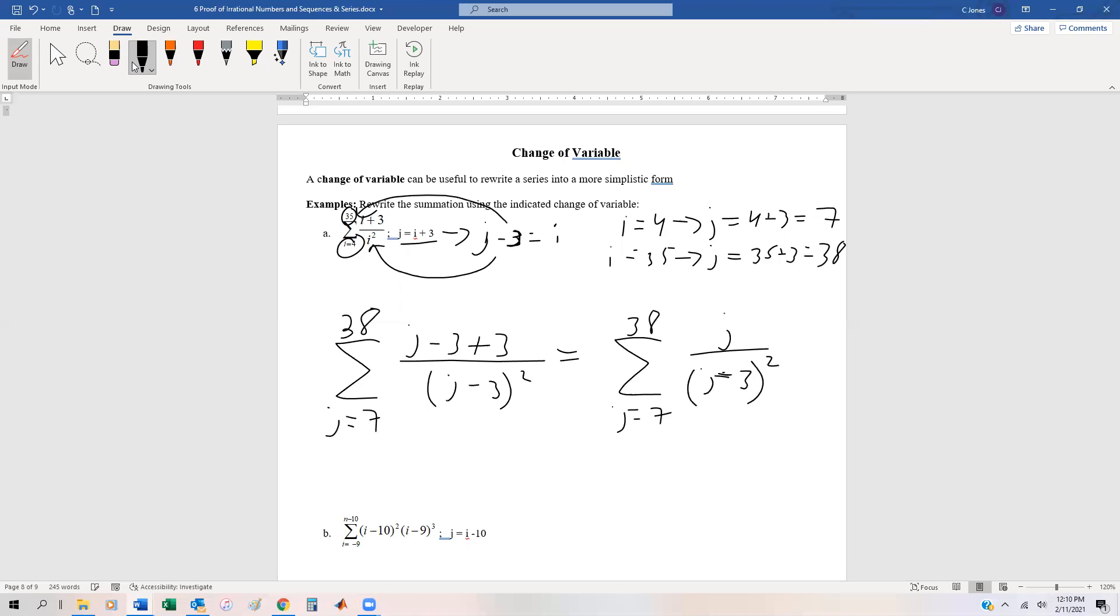We could write this as j equals 7 to 38, j over j minus three squared. I don't know if this is any more simplistic than the first, but it's different. It clears up the numerator a little bit, makes the denominator a bit more complex, and gives us higher numbers to deal with. But these two series, the initial series and the changed series, they're the exact same thing. They will equal the same value.